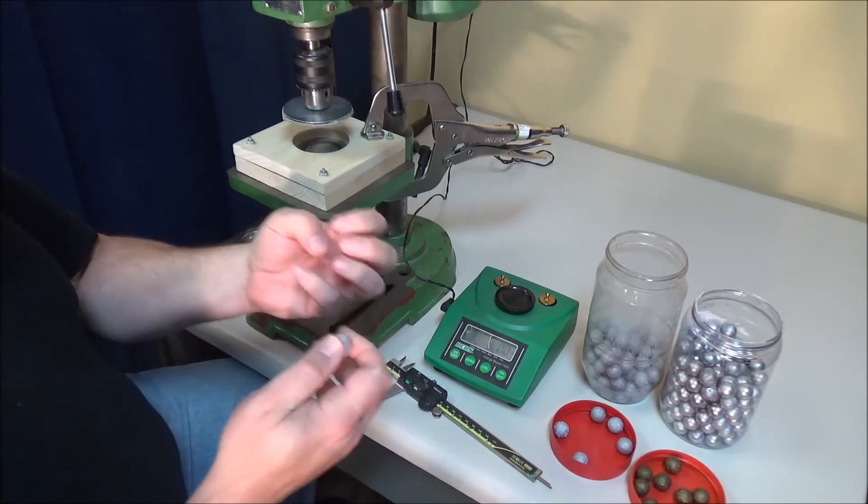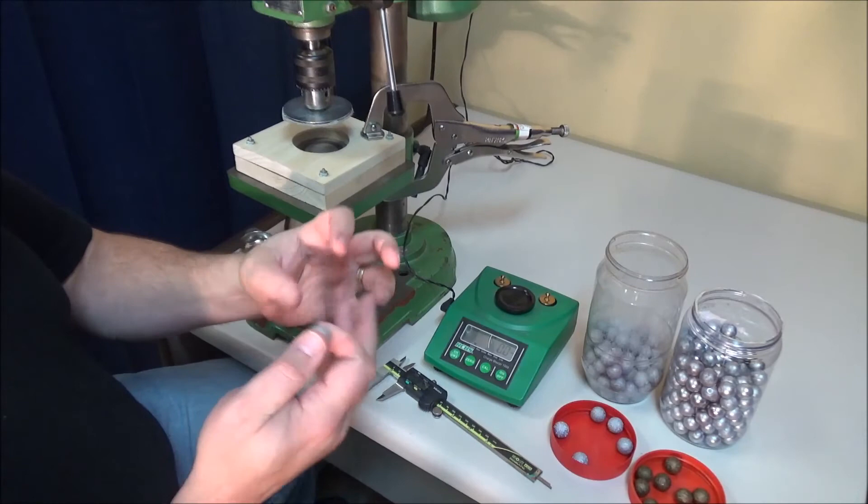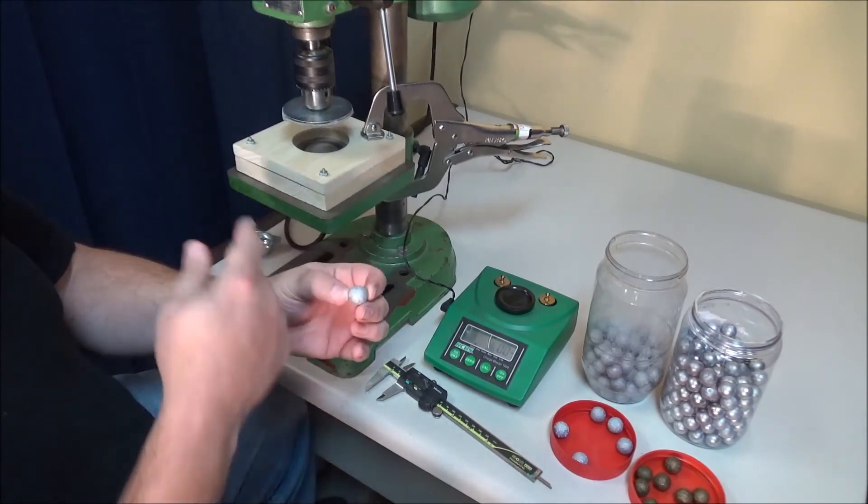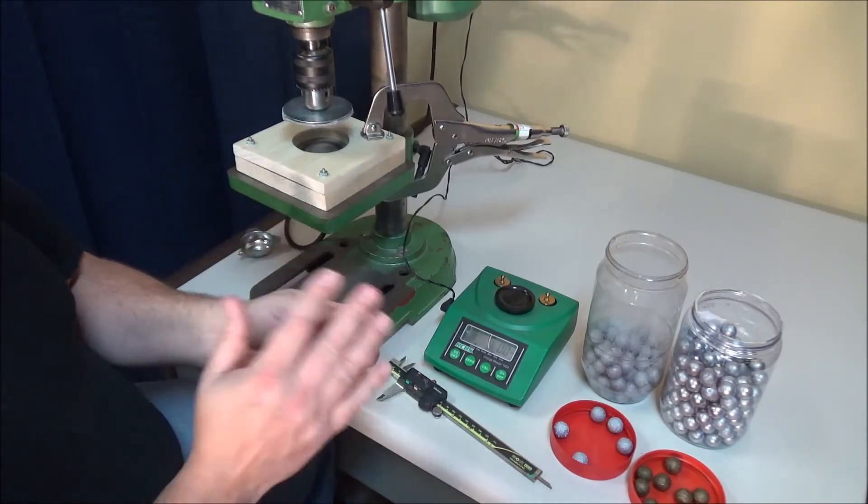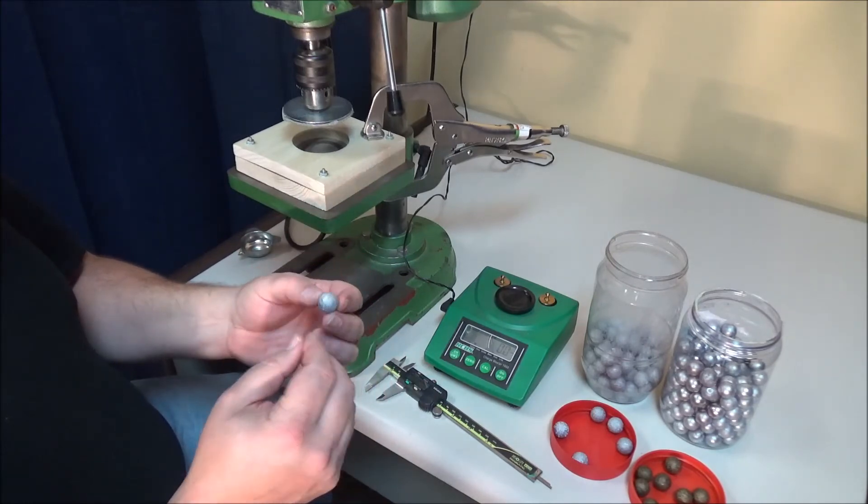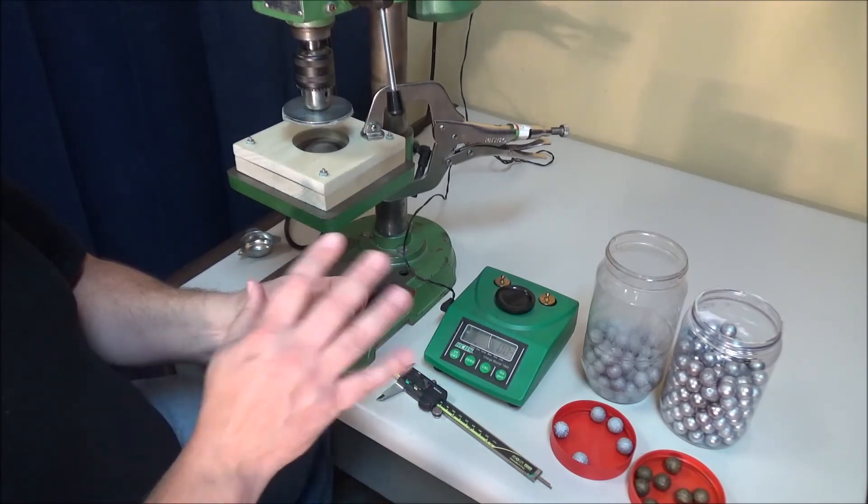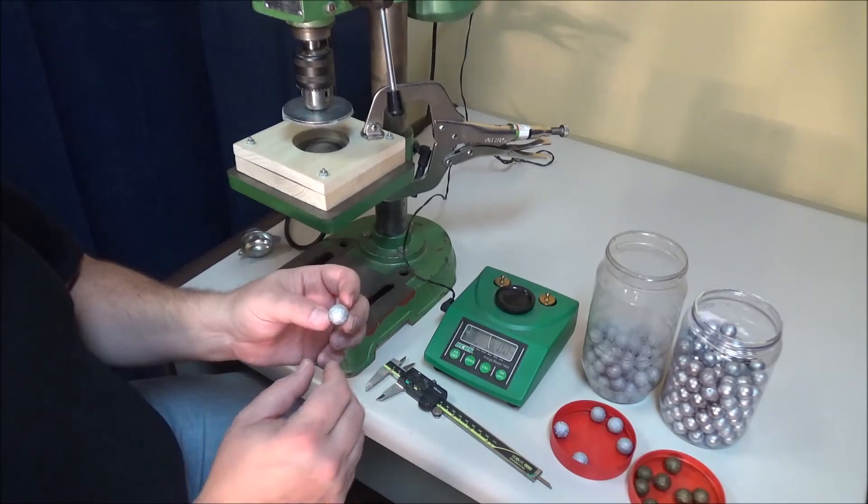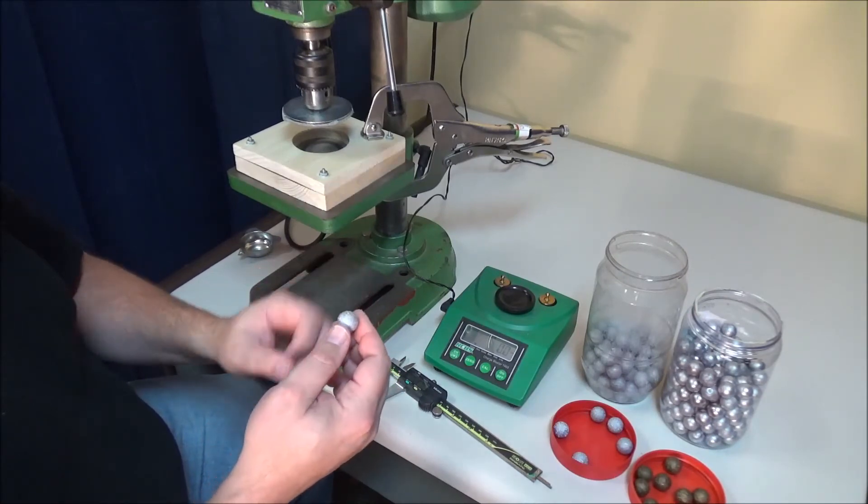And again, that's because of material displacement. It's just like squeezing some Play-Doh in your hands. That Play-Doh, you're not changing the amount of Play-Doh, it just has to go somewhere. So it squirts in between your fingers. Same thing with this device or rolling it between two files. That material has to go somewhere. So it squirts where it has to go. And that results in a slightly larger diameter.